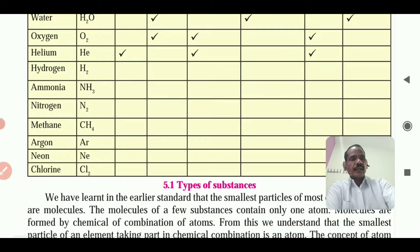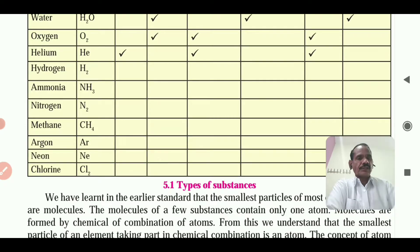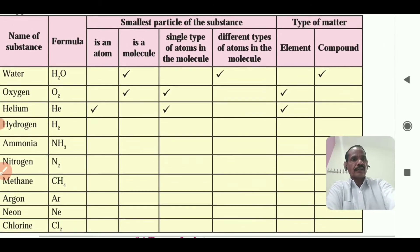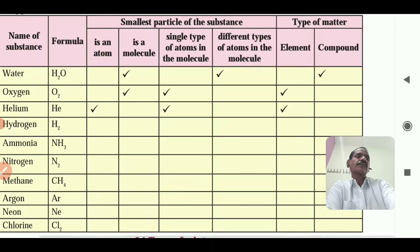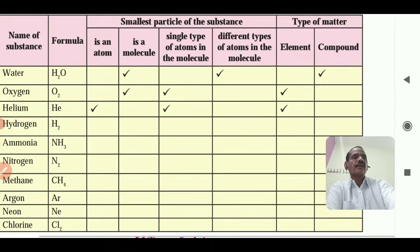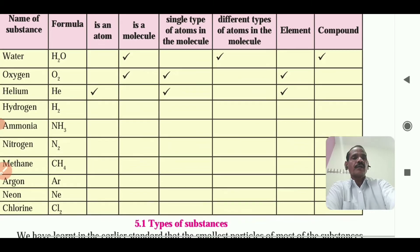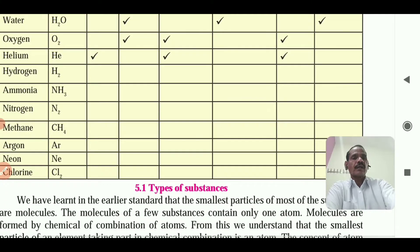We will now look at the types of substances. Matter can be classified into types: the first type is element, and the second type is compound.